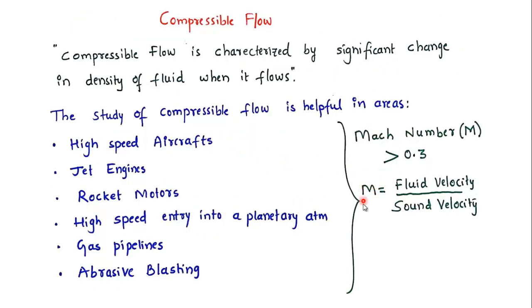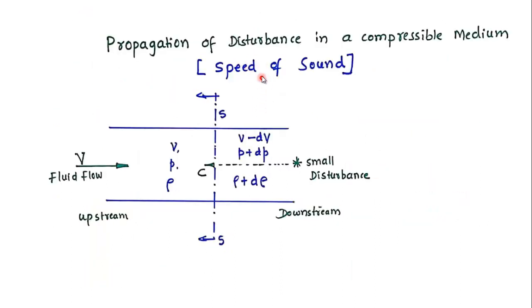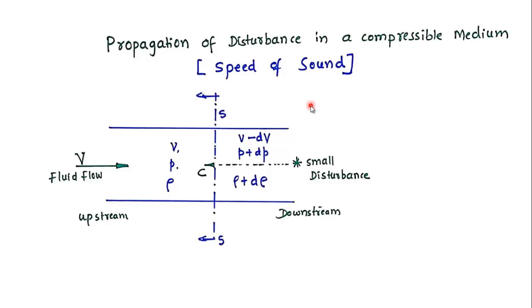Since we consider Mach number as the ratio of fluid velocity to the velocity of sound, we need to study the sound velocity, and now we will see the derivation of speed of sound. We consider a fluid flowing in a pipe with velocity v — this is the upstream and this is the downstream. There are some textbooks where derivations are not given properly, so I recommend you follow this derivation.